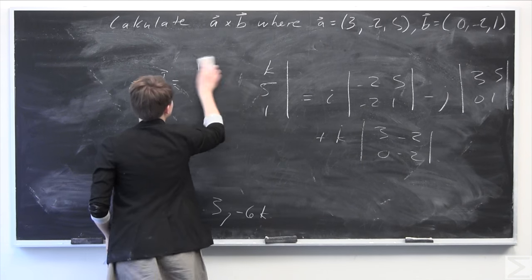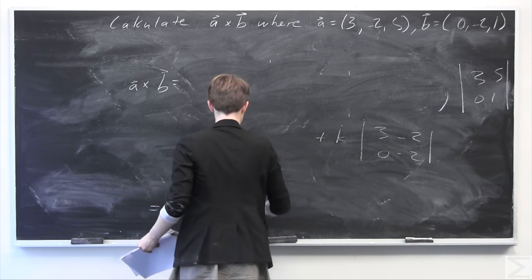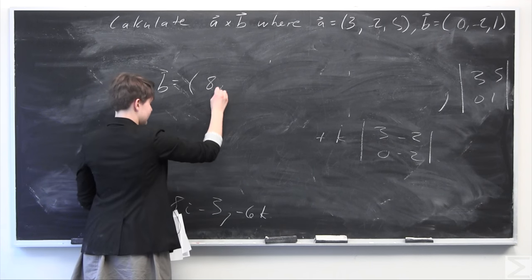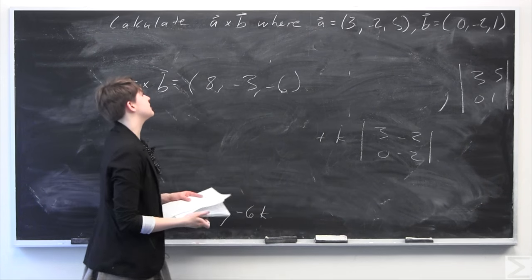We'll just rewrite A cross B. A cross B is going to be equal to - we just pull off the coefficients from here - (8, -3, -6). And that's going to be our final answer.